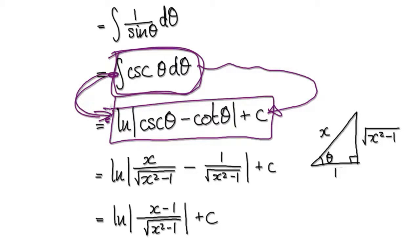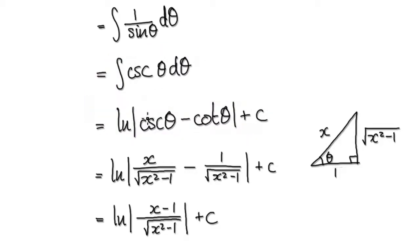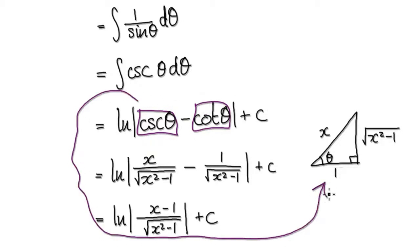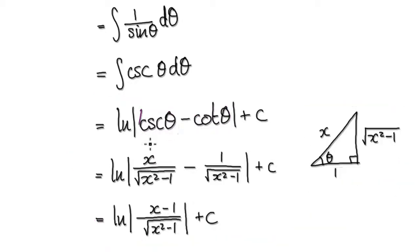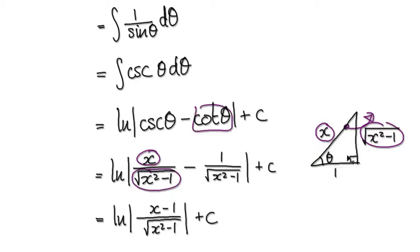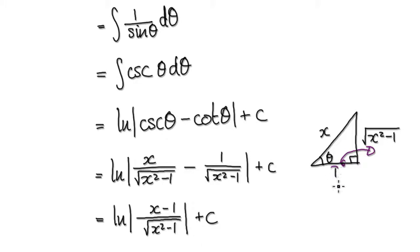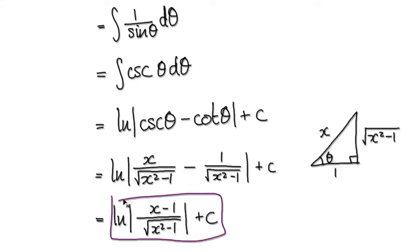So integrating gives us this answer, but we don't want the answer in terms of theta. Going back to our original diagram, let's translate it. Cosecant would be hypotenuse over opposite, and cotangent would be 1 over tangent. So translating back gives you this expression. With the same denominator, you can merge them, giving you this final answer.